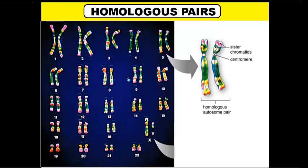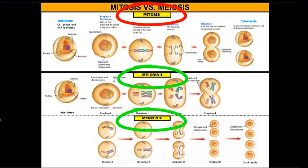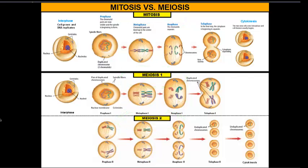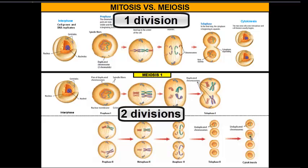Let's take a quick look at the difference between meiosis and mitosis. We have mitosis at the top and meiosis at the bottom. One of the biggest differences is that mitosis is one division — we start off with one parent cell and split it into two daughter cells that are identical to the parent. Whereas in meiosis, we start off with our single cell, go through one set of divisions, and then go through a second set of division. Mitosis has one division, whereas meiosis has two divisions.